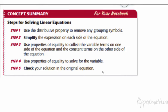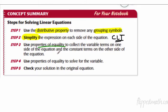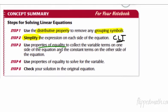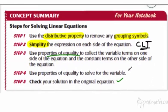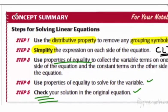Here are the steps we're going to use to solve these. Step 1: use the distributive property first — if you have parentheses, do that first to remove any grouping symbols. Step 2: simplify the expression on each side, which means combining like terms or reducing fractions. Step 3: use the properties of equality — multiply or subtract both sides — to collect variable terms on one side and constant terms on the other. Always look for the smallest variable term. Then solve for the variable and check your solution in the original equation.